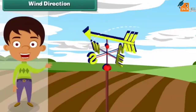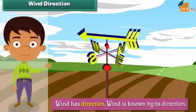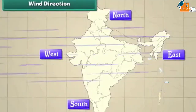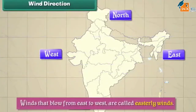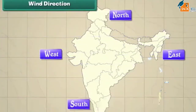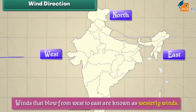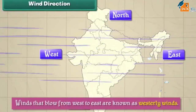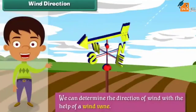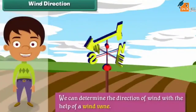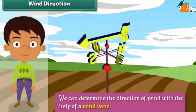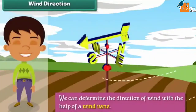Wind direction: Wind has direction and is known by the direction it blows from. For example, winds that blow from east to west are called easterly winds, and winds that blow from west to east are known as westerly winds. We can determine the direction of wind with the help of a wind vane, whose arrow indicates the direction from which the wind is blowing.